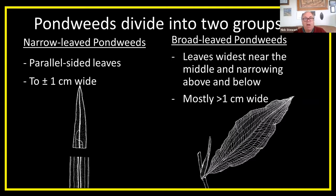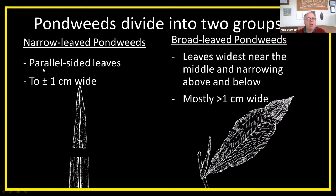Pondweeds really divide into two main groups. The broadleaved ones tend to be more than a centimetre wide, tapered at both ends — widest in the middle and narrower at the top and bottom. The narrowleaved pondweeds have parallel-sided, strap-shaped or stringy leaves up to one centimetre wide. It's this group — the narrowleaved ones — that we're going to be talking about today.